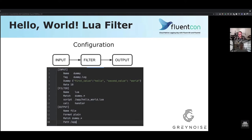The filter stanza is what we're really interested in. The name is the type of filter we want FluentBit to use, which is Lua. The match is the tag assigned in line three. Line nine tells FluentBit where to find the script, and line ten tells it to call the function handler within the script. The output, for our example, we're just going to use the stdout file.